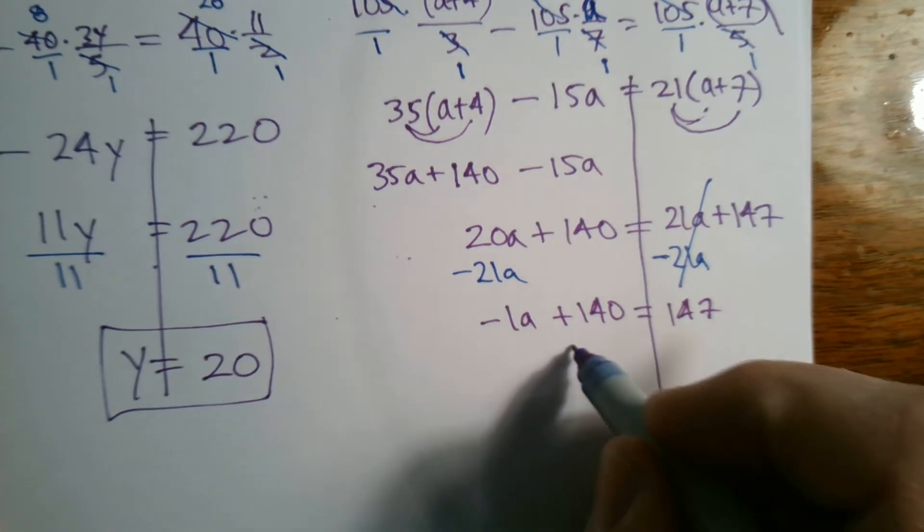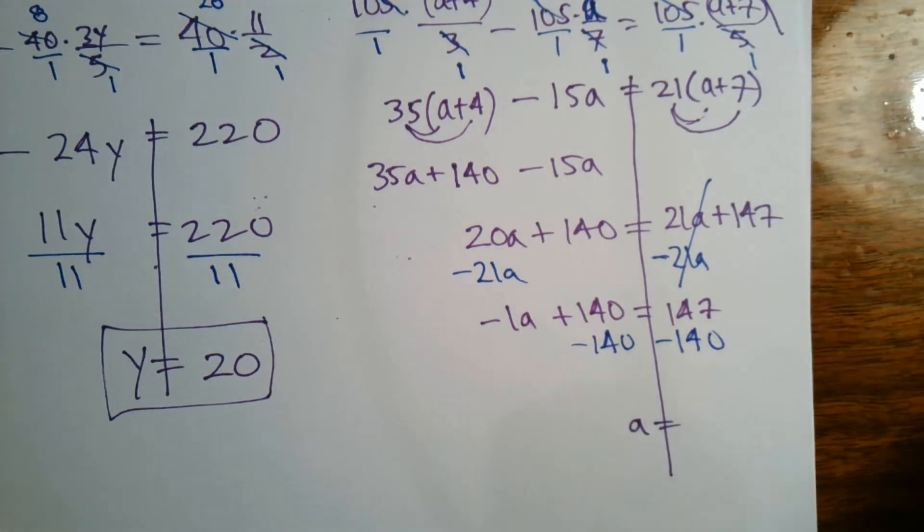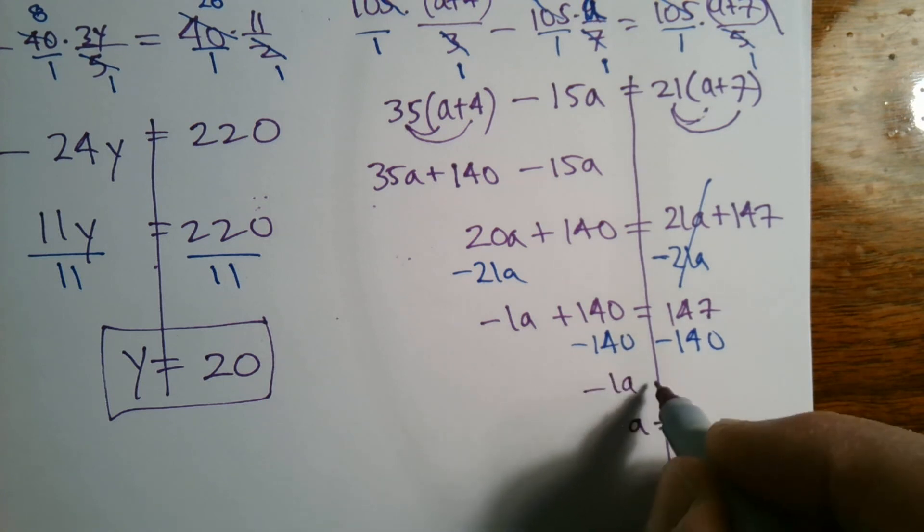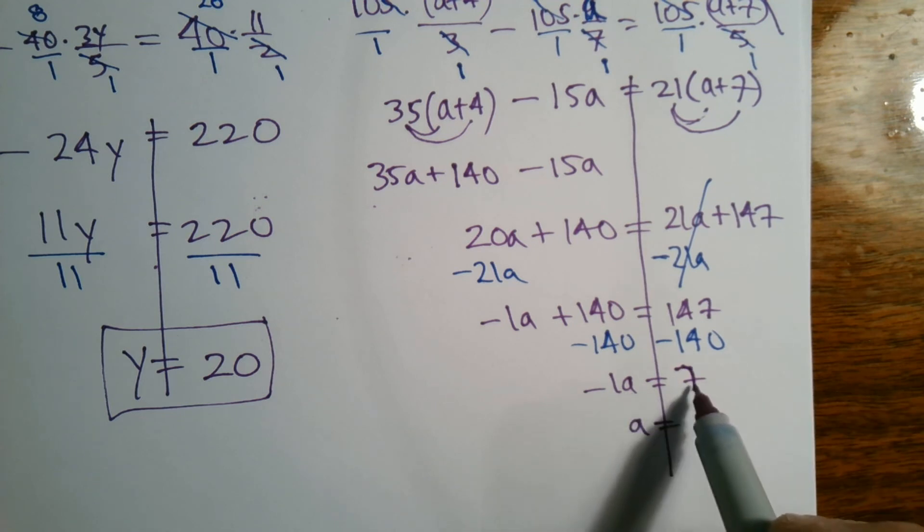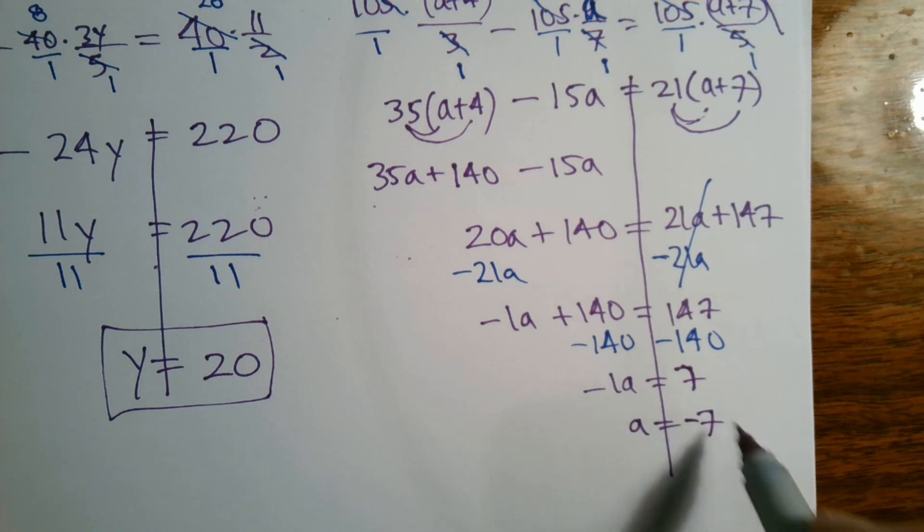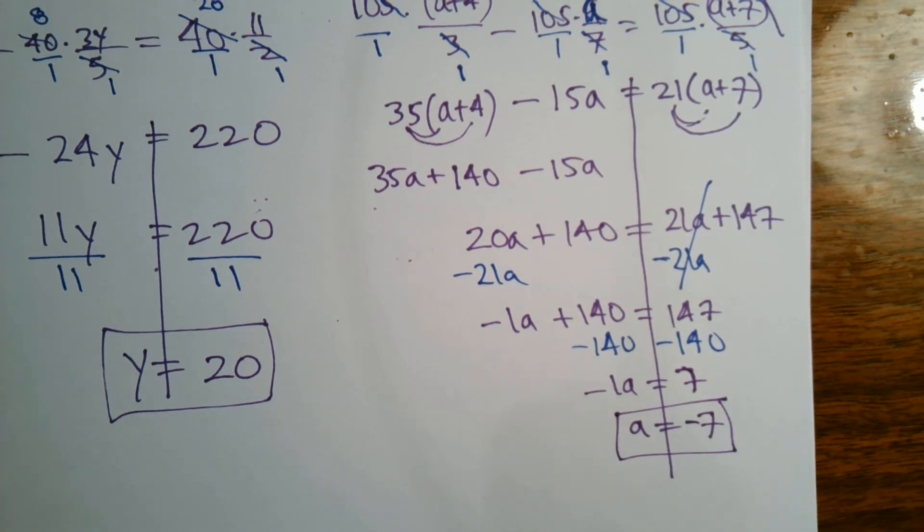And then subtract 140 from both sides and we have negative 1a equals 147 minus 140 is 7. So here's my situation: I have negative 1a equals 7. So what is positive 1a equals? It equals negative 7. It's the opposite. So there we have as our final answer.